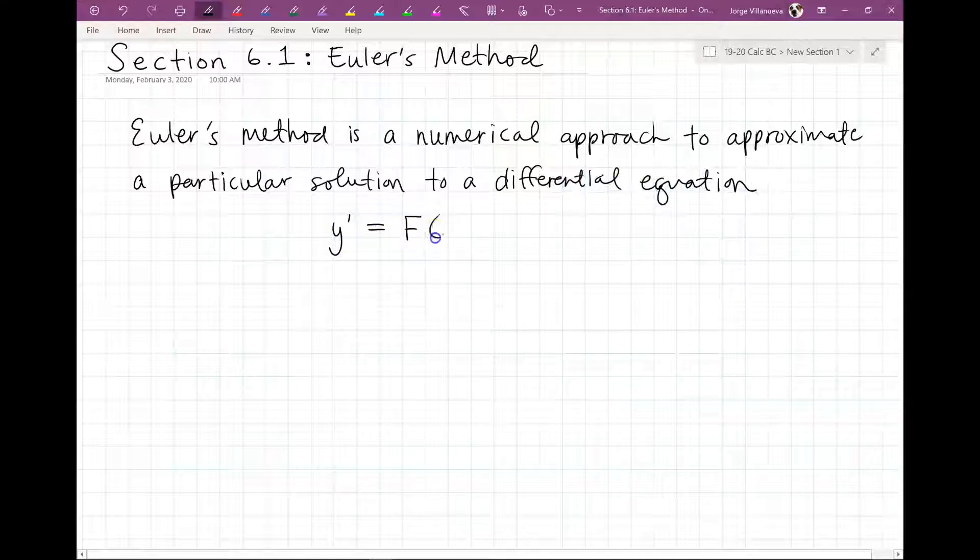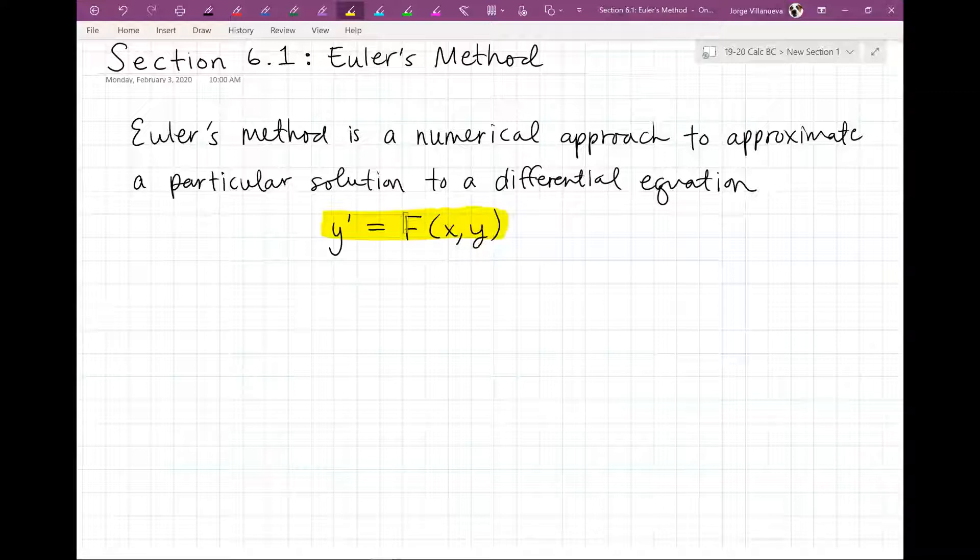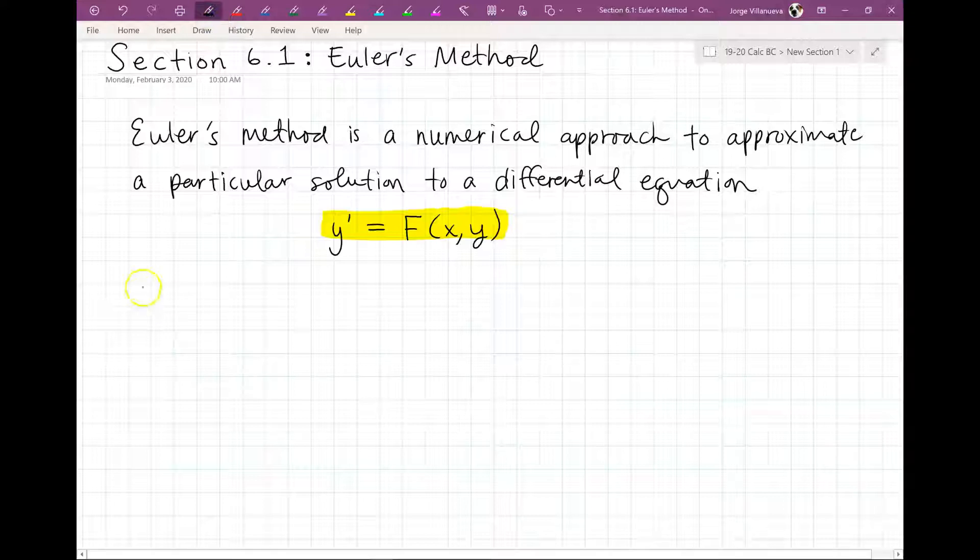That we're going to use, y prime equals F(x,y). Now it's important that you remember that y prime is F(x,y) because you're going to see that F(x,y) come out in the formula that we're going to use. And you have to understand that F(x,y) is a derivative. So y prime equals F(x,y), and to a differential equation that passes through x sub 0, y sub 0.